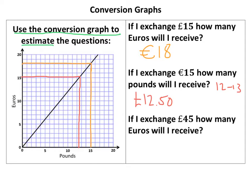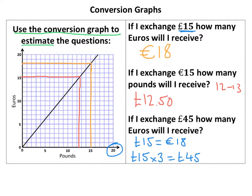The third part says if I exchange 45 pounds, how many Euros will I receive? Unfortunately the graph only goes up to 20, so I've got to find a factor of 45, read that off, and then scale it up. Fortunately, 15 — which I calculated earlier — goes exactly into 45. I know 15 pounds is 18 Euros, and 15 times 3 is 45 pounds, so all I have to do is 18 Euros times 3, which gives 54 Euros.